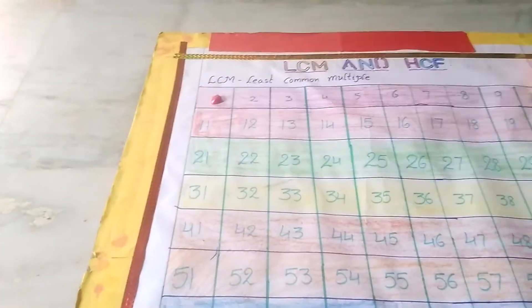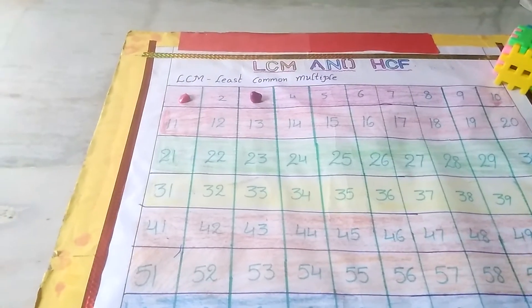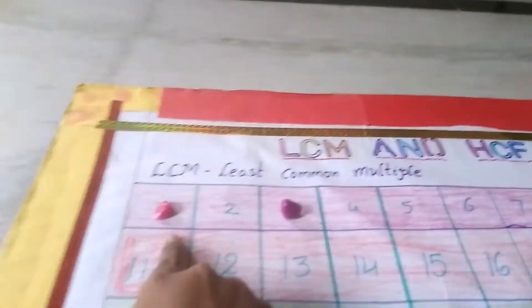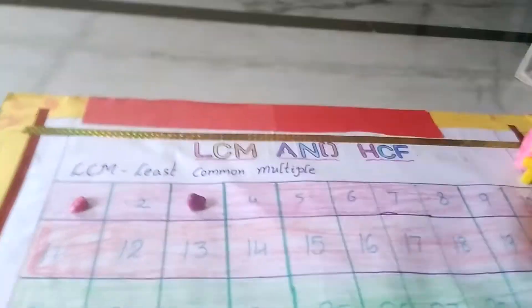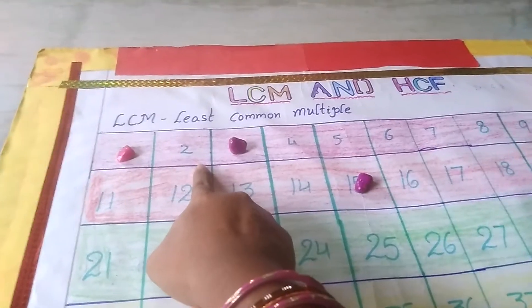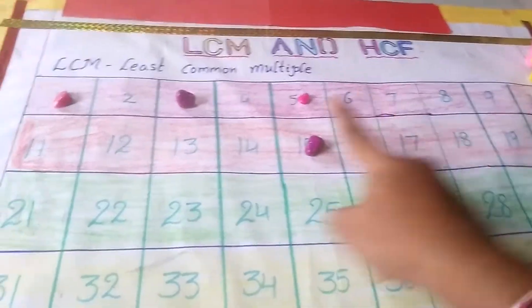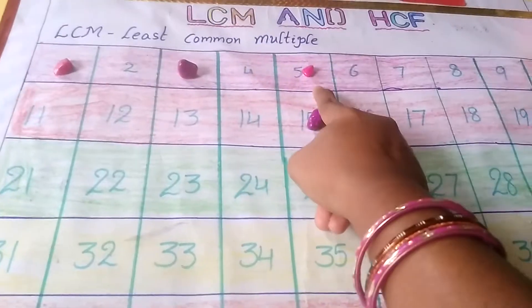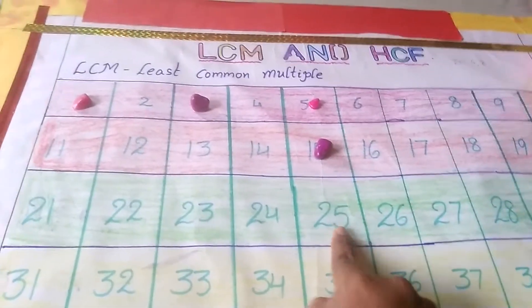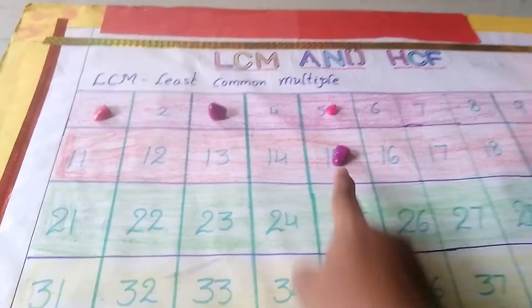Factors of 15: in the 1 times table we get 15, so 1 and 15. Is 15 in the 2 times table? No. In the 3 times table, 3×5 is 15, so 3 and 5. In the 4 times table, no. 5 is repeating, so we stop. The factors of 15 are 1, 3, 5, and 15.